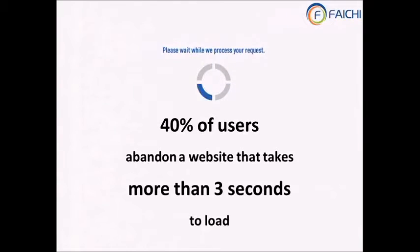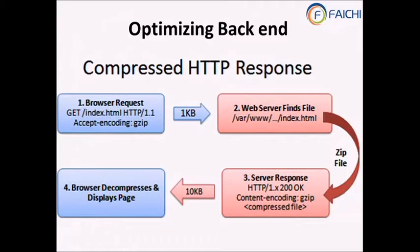Before technologies like BigPipe existed, how did we address this? Conventionally, everybody just said 'load my page faster' without knowing exactly how. We looked at two areas: backend and frontend. The backend can be any technology — Apache, Nginx, or other servers — and optimizing it means getting content to the browser at a very fast rate.